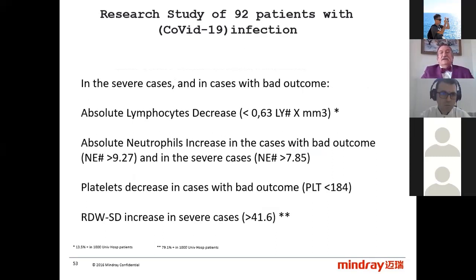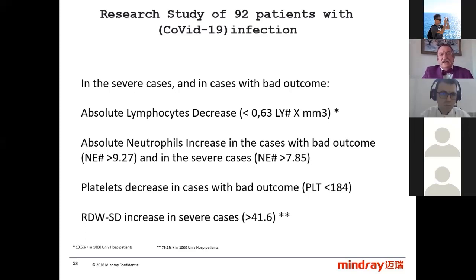Here are the cutoff values. In the severe cases, lymphocytes are lower than 630, absolute neutrophils are higher than 9,200 in patients with bad outcomes, platelet decrease cutoff is 184, and the RDW increase cutoff is 41.6. As I said, we need to consider the delta check and the previous results of patients — from before they came to the hospital for another reason, or from the first day the patient was admitted.